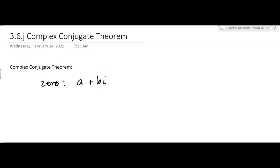And then the book doesn't do this, but I'm going to note that b does not equal zero, so it has an imaginary part.